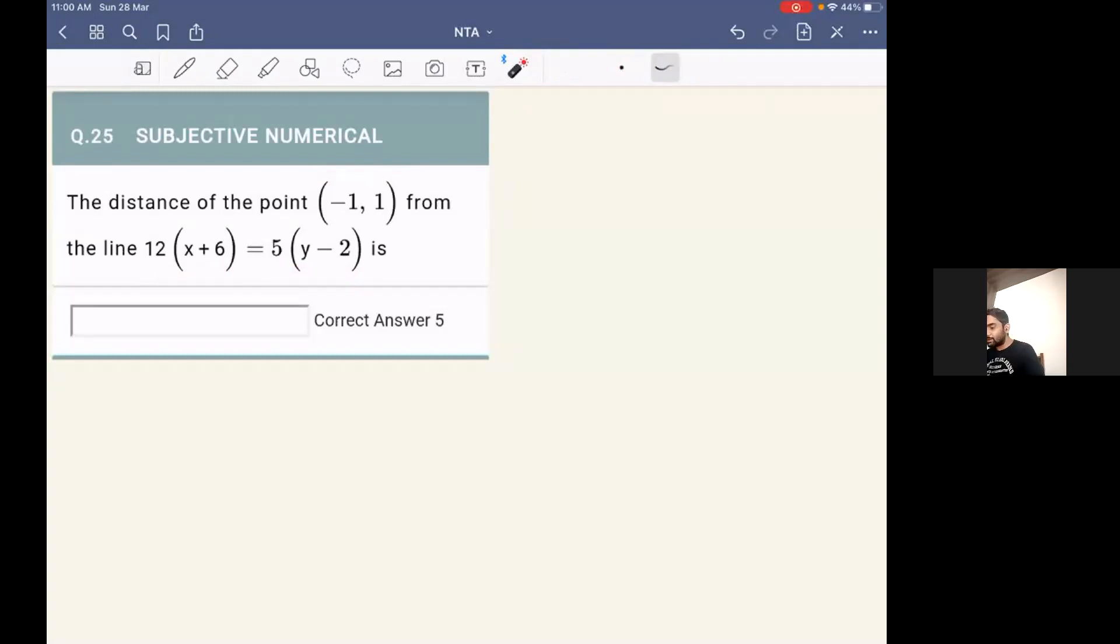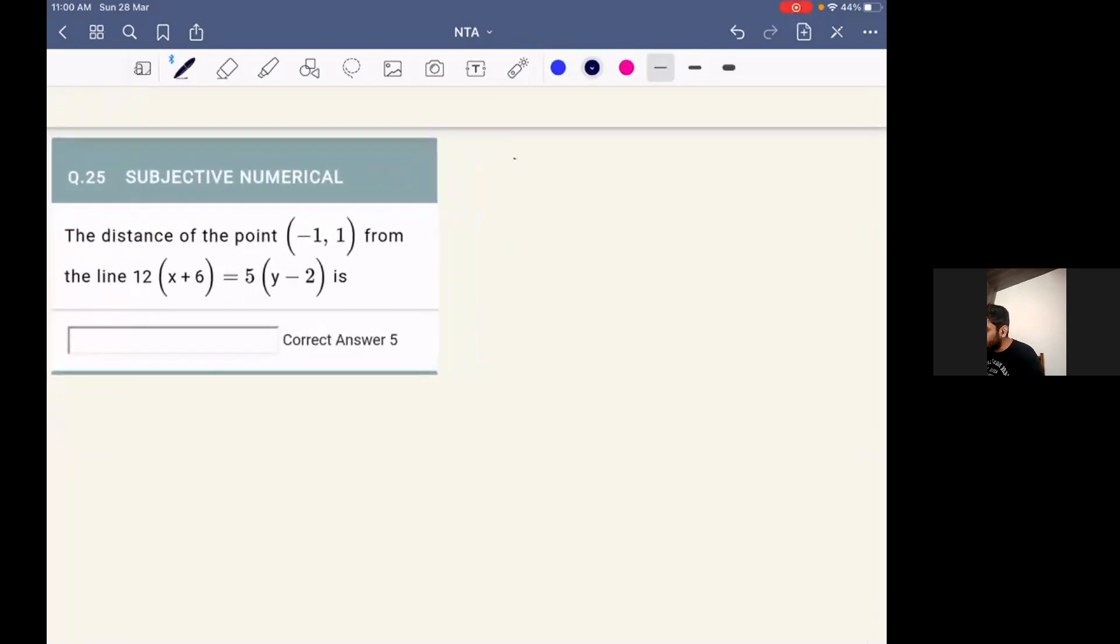So we'll directly apply the formula over here. We know that distance between a point (x1, y1) and a line ax plus by plus c equal to zero is given as mod of ax1 plus by1 plus c by root over a squared plus b squared.